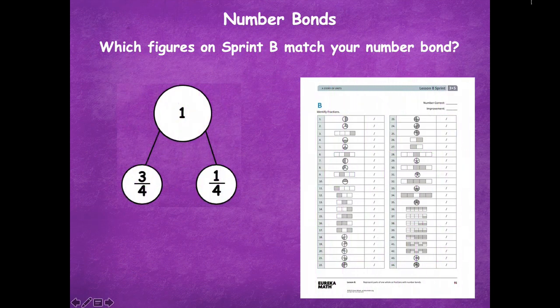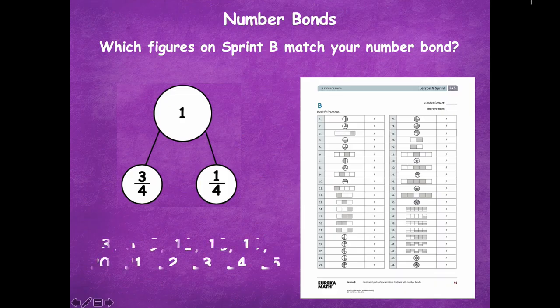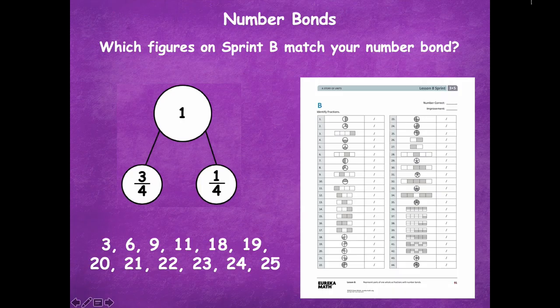Which figures on sprint B match your number bond? You need your sprint to look at the page. You're looking for fractions that show three-fourths and one-fourth. Pause the video, find all the ones that have those modeled, jot them down on your dry erase board, and click play when ready. Here's what I came up with: 3, 6, 9, 11, 18, 19, 20, 21, 22, 23, 24, and 25 all model either three-fourths or one-fourth. Did you get all those?